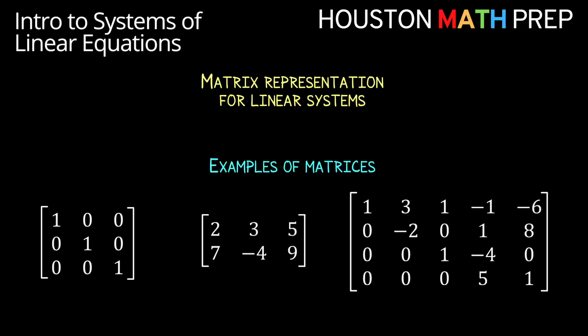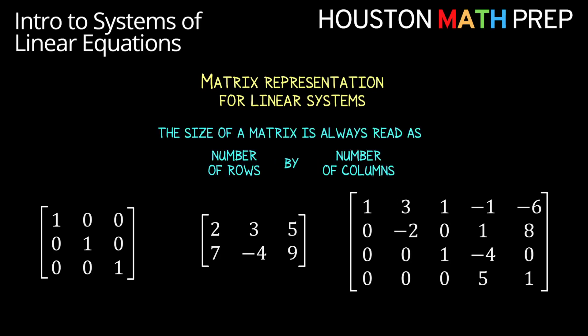One of the most common ways that we'll see linear systems represented in linear algebra is not in their equation form, but rather in their matrix form. Remember that a matrix is just a rectangular table, sometimes called an array, that contains all the information about each variable in a particular column of that table. If we want to talk about what size of matrix we're working with, we'll give that in a statement that tells us first the number of rows in our matrix, followed by the number of columns in our matrix.